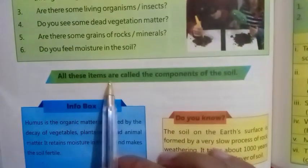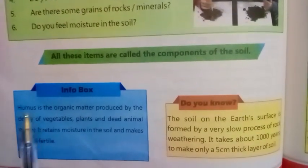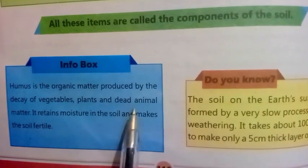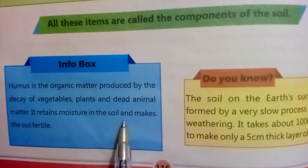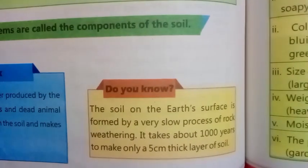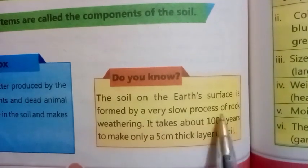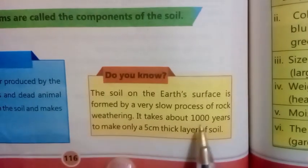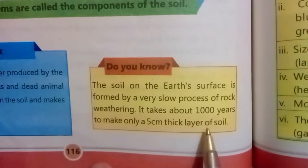All these items are called the components of the soil. Info box: Humus is the organic matter produced by the decay of vegetables, plants, and dead animal matter. It retains moisture in the soil and makes the soil fertile. Do you know? The soil on the earth's surface is formed by a very slow process of rock weathering. It takes about a thousand years to make only a five centimeter thick layer of soil.